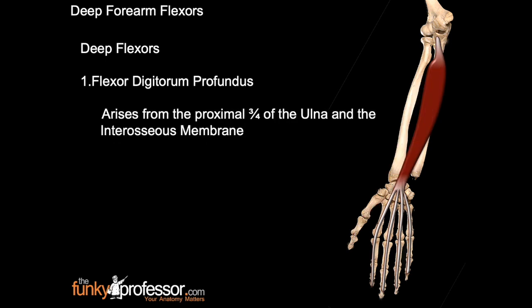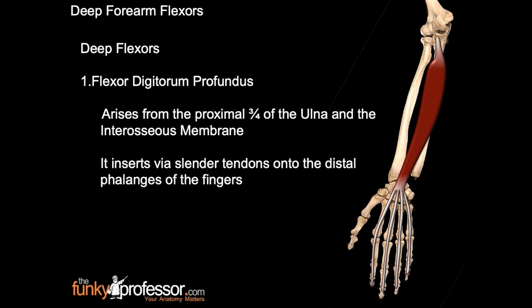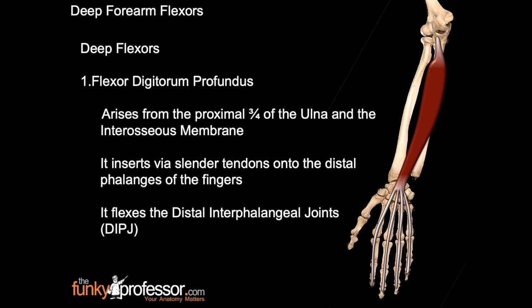Flexor digitorum profundus. This muscle arises from the proximal three-quarters of the ulna and the interosseous membrane. It inserts by slender tendons onto the distal phalanges of the fingers. It works by flexing the distal interphalangeal joints of the fingers.